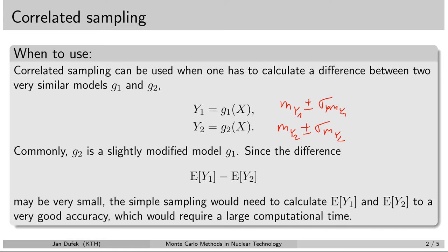In that case, the difference that you could calculate would not be very accurate — it would contain very large errors. So if you wanted to obtain a very good estimate of the difference of these two mean values, you would have to make sure that the standard deviation is sufficiently small — much, much smaller than the difference of these two mean values. That's a problem, because it could take very, very long computing time to reduce the standard deviation to such a level.